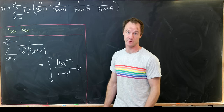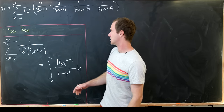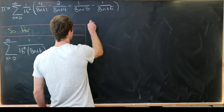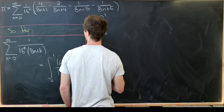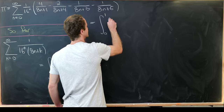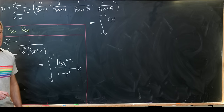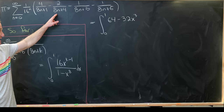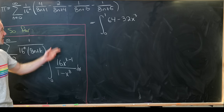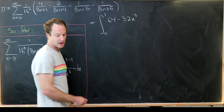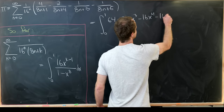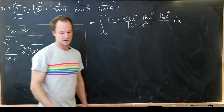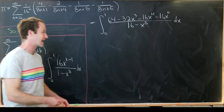So this transforms into the integral from 0 to 1 of: 16 times 4 is 64, and with k equal to 1 we have x to the 0; then minus 32x cubed since k equals 4 gives 4 minus 1 equals 3, and 2 times 16 is 32; then minus 16x to the 4th and minus 16x to the 5th for the appropriate k values. This is all over 16 minus x to the 8 dx. From here we'll factor the numerator and denominator.